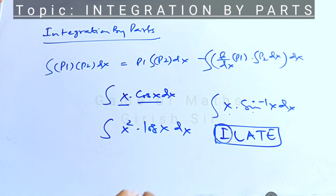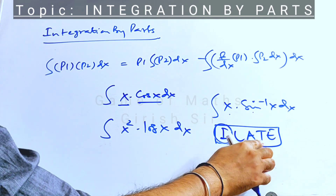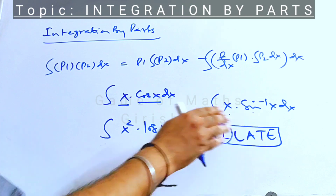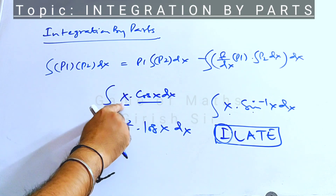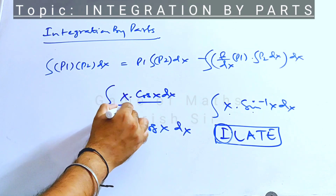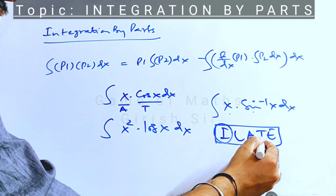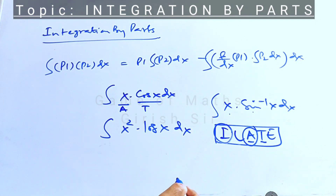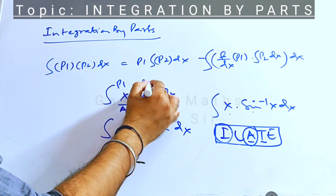I stands for inverse function, L for log function, A for algebraic, T for trigonometric, and E for exponential. This is a decreasing preference order. So if you have a product of algebraic and trigonometric functions, we give preference to the algebraic function — it will be selected as P1, and the trigonometric function as P2.